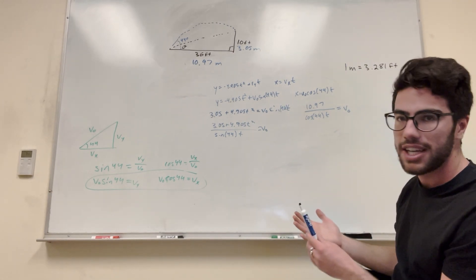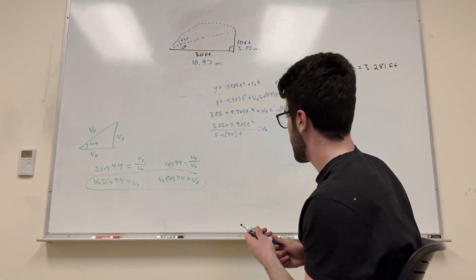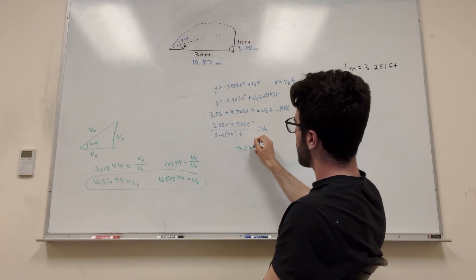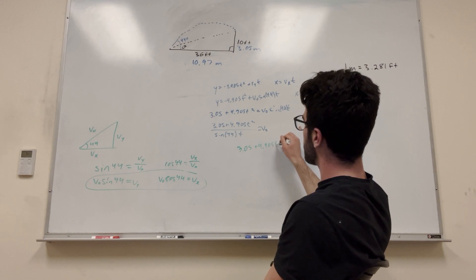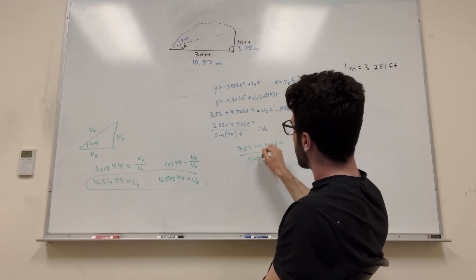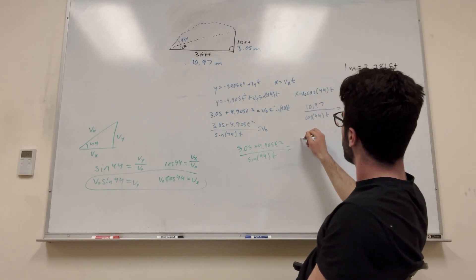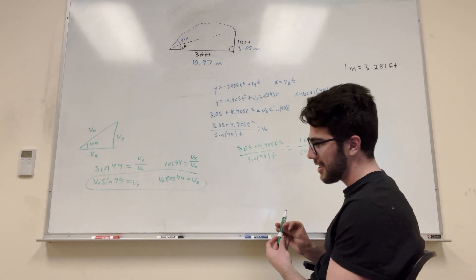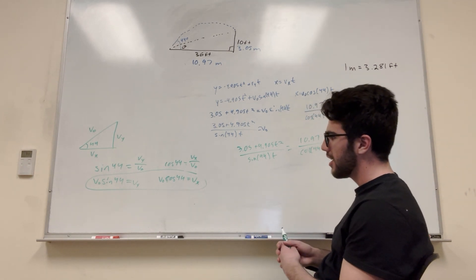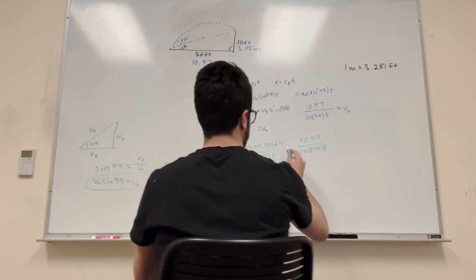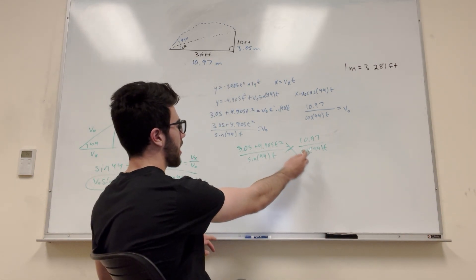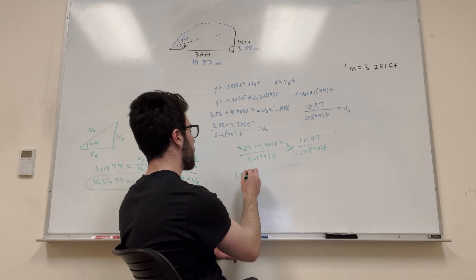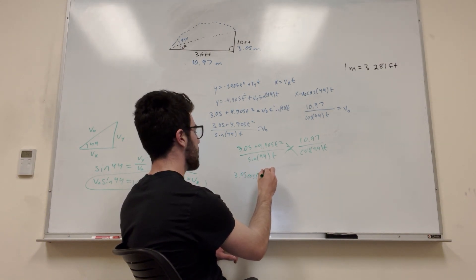Okay, this is beautiful guys. We have two initial V-naughts. V-naught here and V-naught here. And what we can do, because they're both V-naughts, we can set this equation equal to this equation. And then we're going to just have T. And all we have to do then is find out what T is. So let's do that. Let's use green. So let's set them equal to each other. 3.05 plus 4.905 T squared over sine 44 T is equal to 10.97 over cosine 44 T.